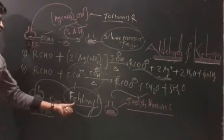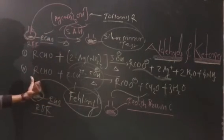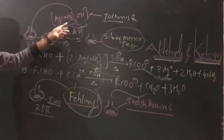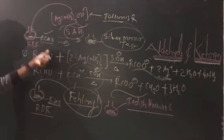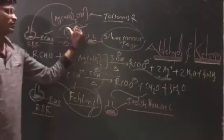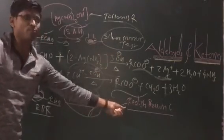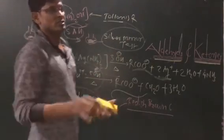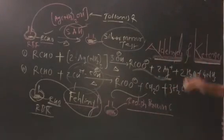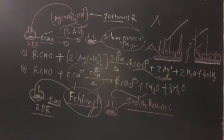So, silver ammonium hydroxide — Tollens' reagent — reacts with aldehyde to give the silver mirror test, while Fehling's solution reacts with aldehyde to give a reddish-brown precipitate. These are the two tests used to distinguish between aldehydes and ketones.